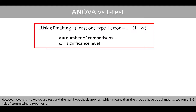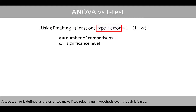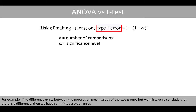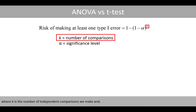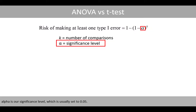However, every time we do a t-test and the null hypothesis applies, which means that the groups have equal means, we're under a 5% risk of committing a type 1 error. A type 1 error is defined as the error we make if we reject the null hypothesis even though it is true. For example, if no difference exists between the population mean values of the two groups, but we mistakenly conclude that there is a difference, then we have committed a type 1 error.